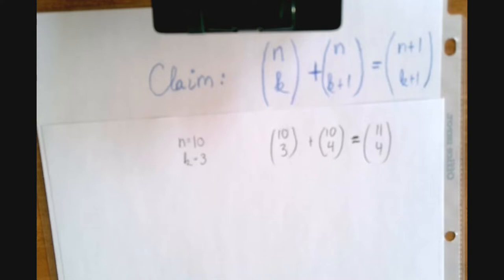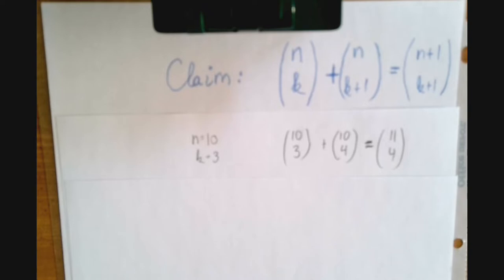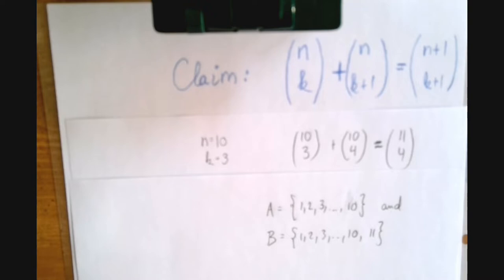First one will be a combinatorial argument. I'm not going to use n and k in this proof, we're just going to use the numbers. Let A and B be sets defined as shown. So A is just the set of the first 10 counting numbers and B is almost the same but we added 11 in there. So A has 10 elements, B has 11 elements.